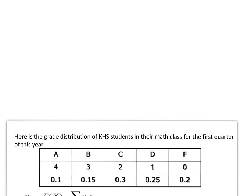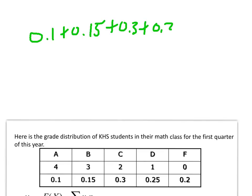Let's imagine I collected math grades for Copley High School students for the first quarter. In the probability distribution, grades go from A to F, assigned numerical values 4 down to 0. Ten percent got an A, 15% got B's, 30% got C's, 25% got D's, and 20% got F's. Adding up the probabilities gives 1, so this is a legitimate probability distribution.